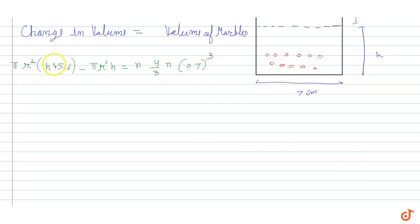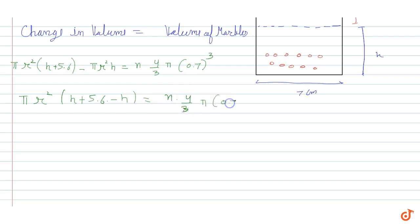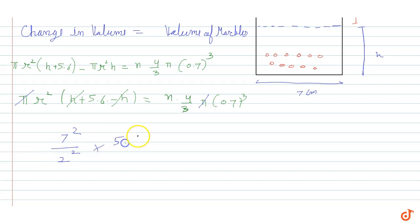Taking π r² common, we get h + 5.6 − h, which simplifies to 5.6, equal to n × (4/3)π × (0.7)³. The π cancels on both sides. The radius of the base is 7/2 since diameter is 7, so we have (7/2)² × 5.6 = n × (4/3) × (7/10)³.